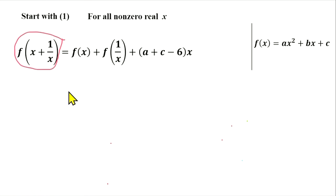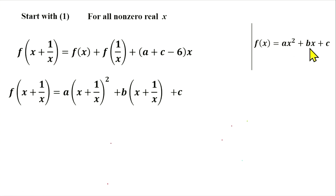In the left hand side we have the following. So we just replaced x here with x plus 1 over x. In the right hand side, f of x is just equal to this, and f of 1 over x is given by this expression.